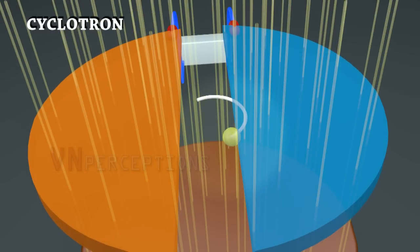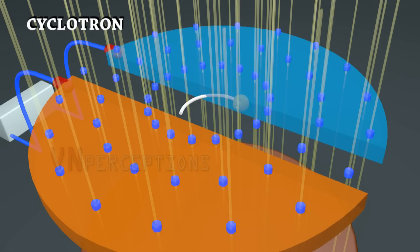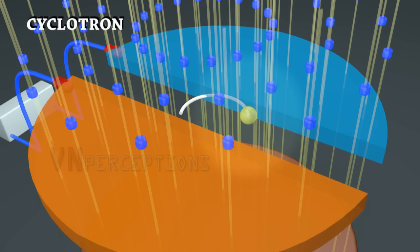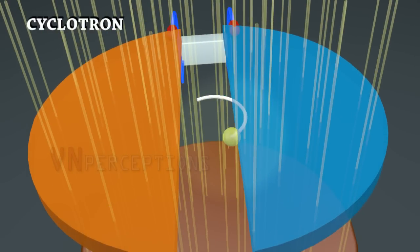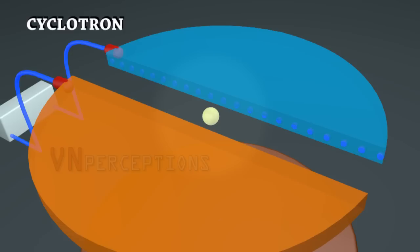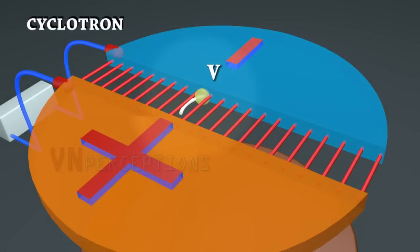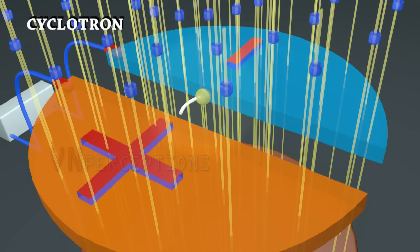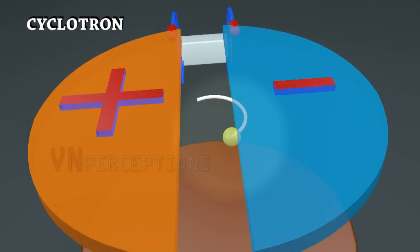If the time taken to complete one circle is T then the time taken to complete semicircle would be T by 2. As soon as the particle comes to the end it is influenced by electric field. When the particle was born its velocity was 0. When it enters the D its velocity is V, and it is constant because the magnetic field cannot change the velocity.